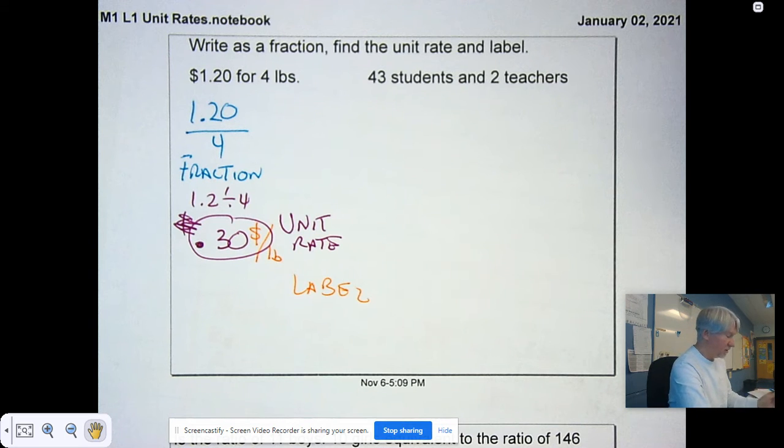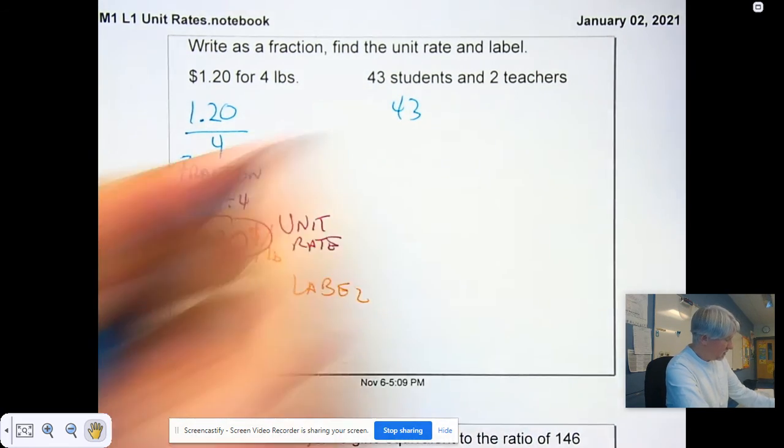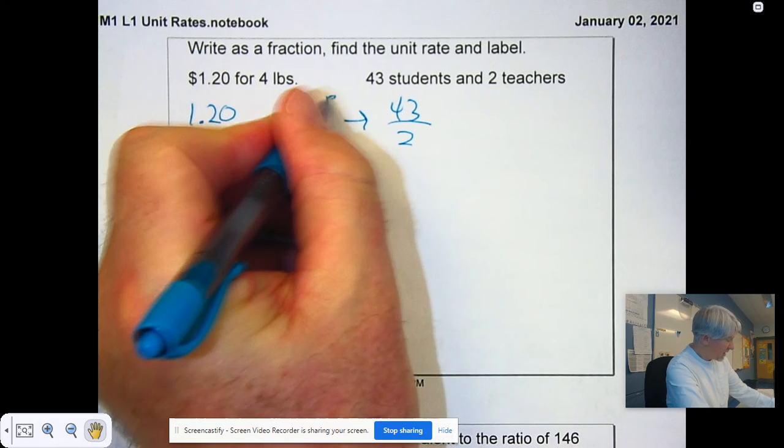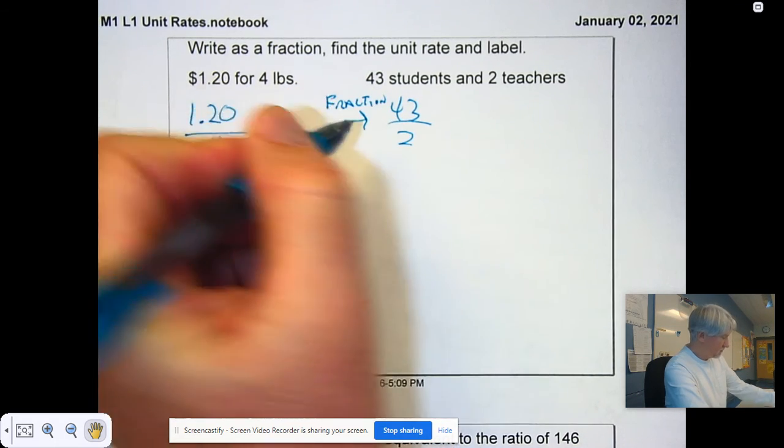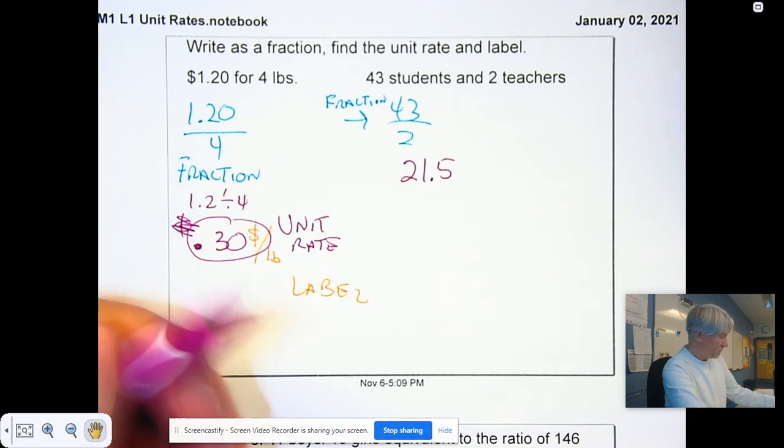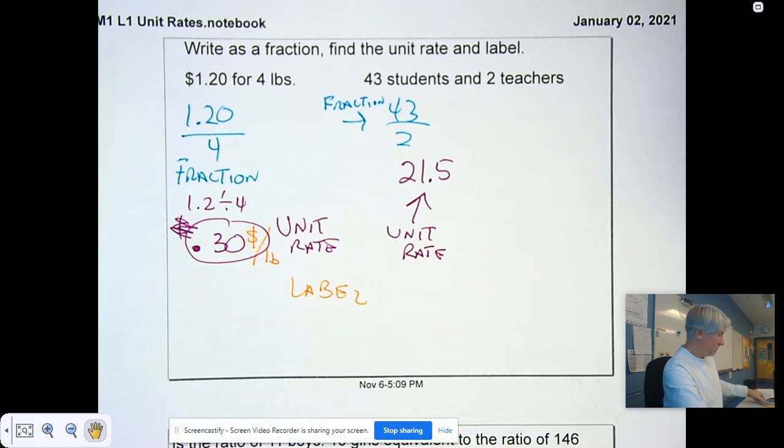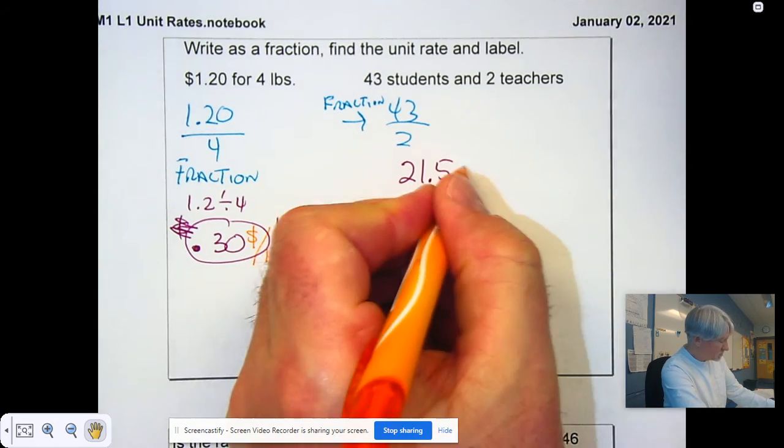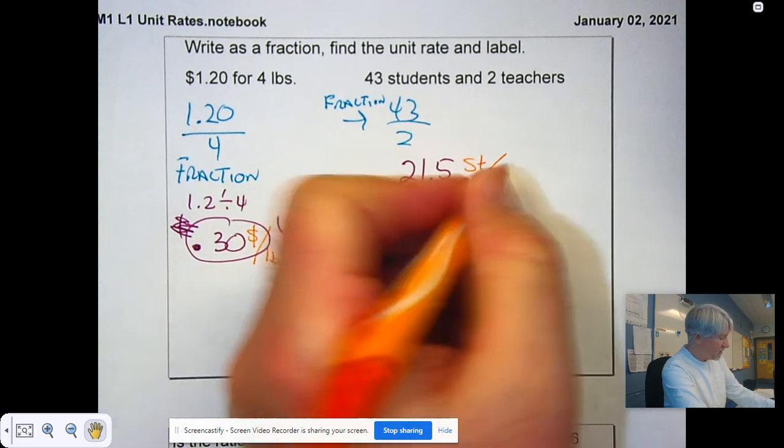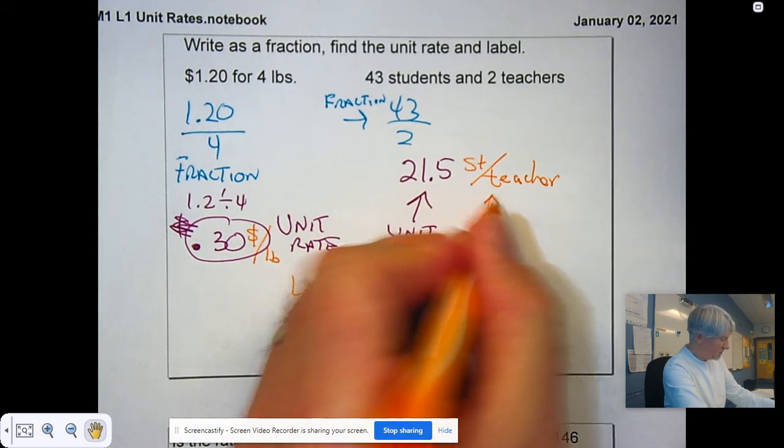So, you try 43 students and 2 teachers. Write it as a fraction. Find the unit rate and label it. 43 over 2, that's the fraction. 43 divided by 2 is 21 and a half. That is the unit rate. And the label was students divided by teachers, so it's student per teacher. That's the label.